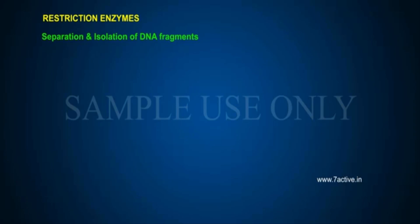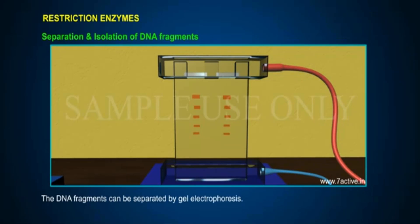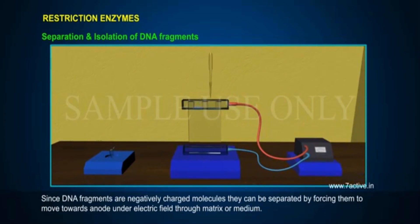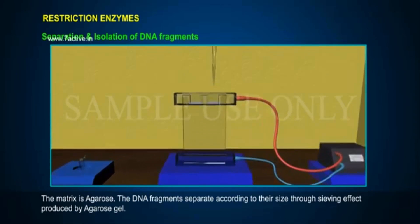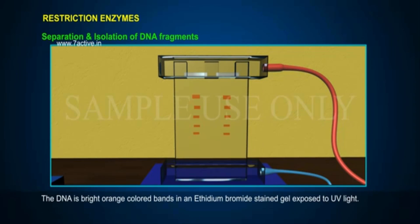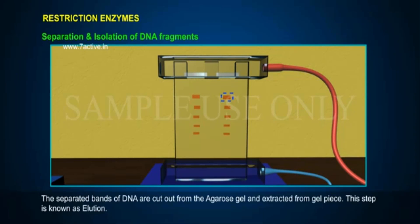Separation and Isolation of DNA Fragments: The DNA fragments can be separated by gel electrophoresis. Since DNA fragments are negatively charged molecules, they can be separated by forcing them to move towards a positive node under an electric field through a matrix or medium. The matrix used is agarose. The DNA fragments separate according to their size through a sieving effect produced by the agarose gel. The DNA appears as bright orange colored bands in an ethidium bromide stained gel exposed to UV light. The separated bands of DNA are cut out from the agarose gel and extracted from the gel. This step is known as elution.